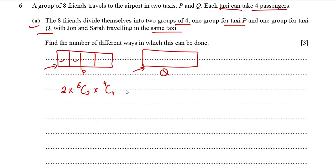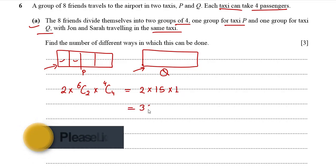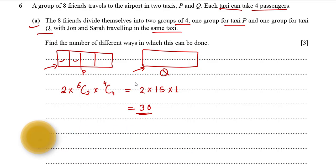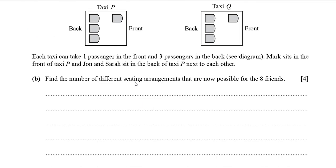So the total number of ways is: 2 × 6C2 × 4C4. Here 6C2 is 15, and 4C4 is 1, giving us 2 × 15 × 1 = 30. There are 30 ways in which John and Sarah can travel in the same taxi while the others travel in the other taxi with two of them accompanying John and Sarah.